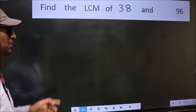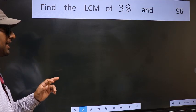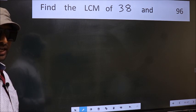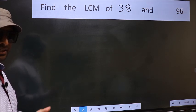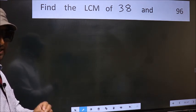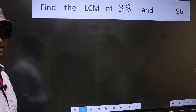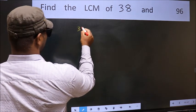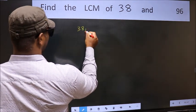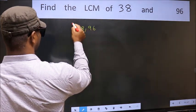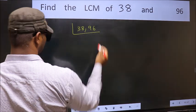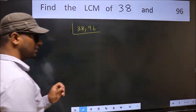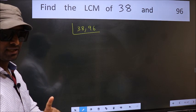Find the LCM of 38 and 96. To find the LCM, first we should frame it in this way — writing 38 and 96 side by side. This is step 1.